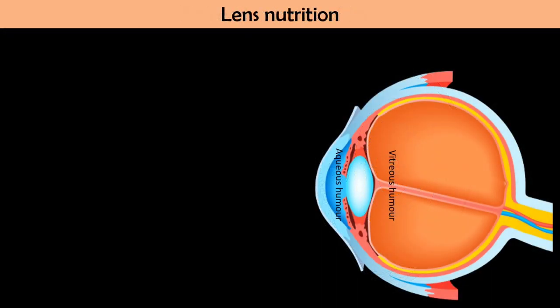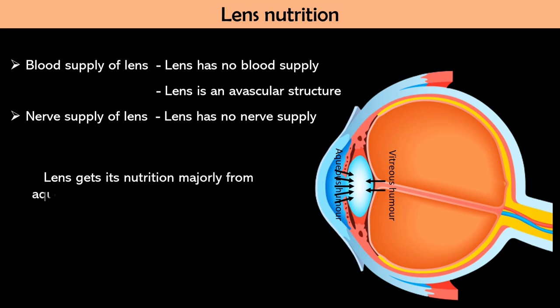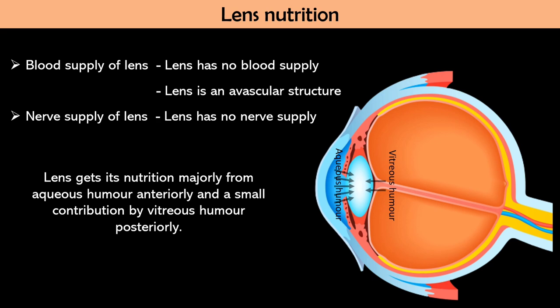Now lens nutrition. But before lens nutrition, let me tell you about blood supply of lens. Lens has no blood supply, lens has no blood vessels in it, lens is an avascular structure, and no nerve supply also there is in lens. The question is from where lens gets its nutrition? Answer is lens gets its nutrition majorly from aqueous humor anteriorly and a small contribution by vitreous humor posteriorly.